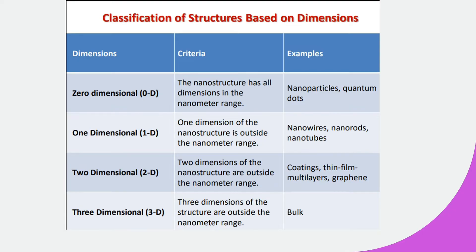As you know, there are three dimensions: x, y, and z. If a material has the x dimension, the y dimension, and the z dimension all in the nanometer range, then such a nanomaterial is known as a zero-dimensional nanomaterial, and examples of that are nanoparticles or quantum dots.